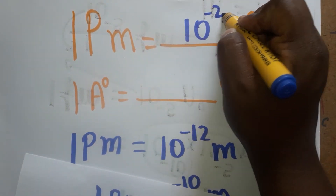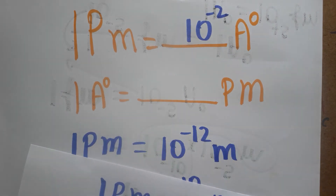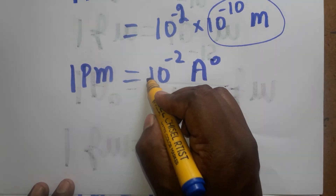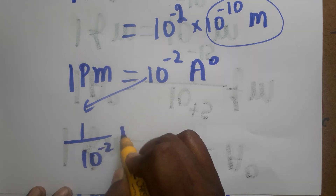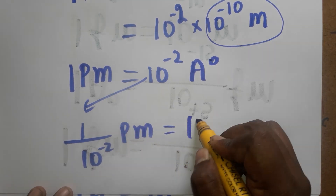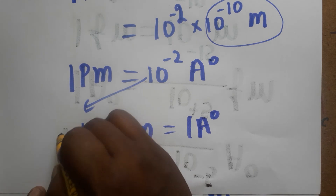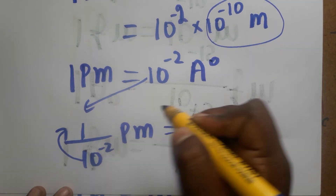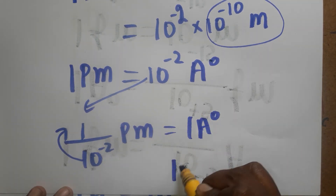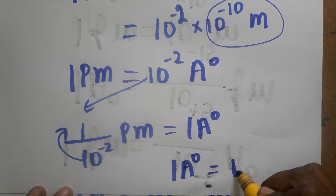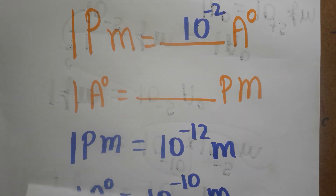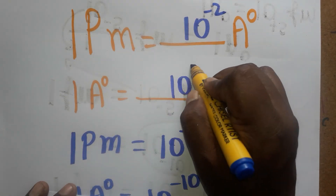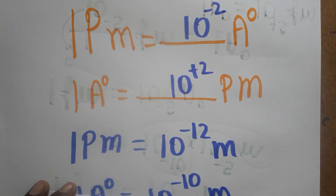Now for angstrom unit to picometer, it is the opposite. We write 1 divided by 10 power minus 2 picometer is equal to 1 angstrom unit. Bringing 10 power minus 2 from denominator to numerator, it becomes 10 power plus 2. So 1 angstrom unit is equal to 10 power plus 2 picometer. Thank you for watching my video; if you like my channel, please subscribe.